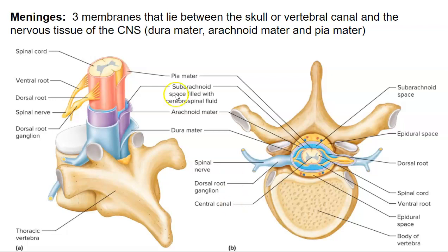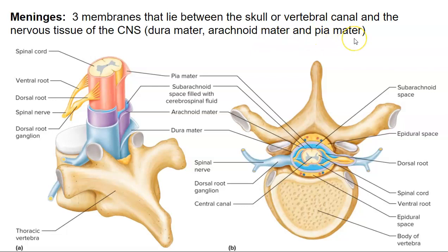Let's look at the meninges first. The meninges are three membranes that lie between the skull or vertebral column and the nervous tissue of the central nervous system. So there are three: the dura mater, the arachnoid mater, and the pia mater.